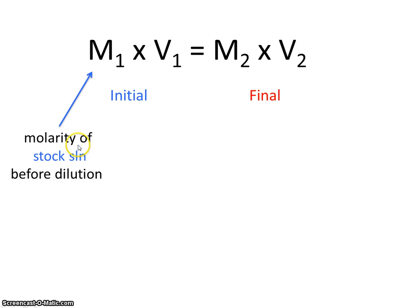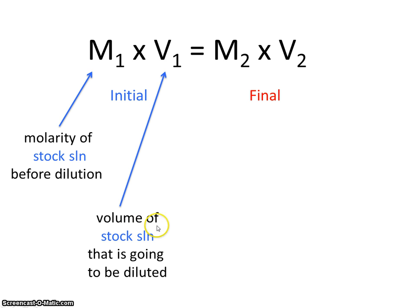M1, that's the molarity of the stock solution before we perform the dilution, so before we add water. V1, that's the volume of stock solution that is going to be diluted. Or this is the amount of solution that we will be adding water to.